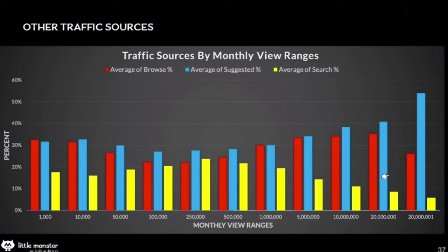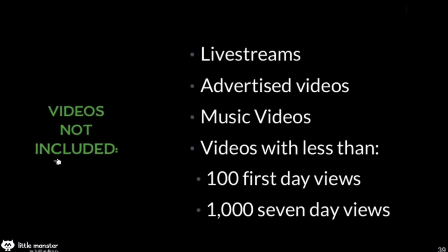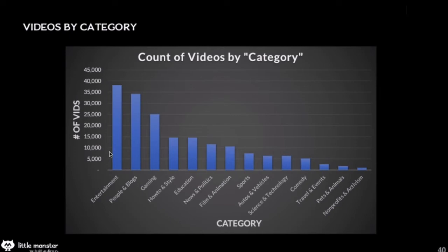Traffic sources by monthly view ranges: as your channel gets larger, search becomes less important, browse becomes less important, and suggested becomes more important — but these three elements continue to be the most important overall. For video data, he didn't include anything about live streams, advertised videos, music videos, videos with fewer than 100 first-day views, or fewer than 1,000 seven-day views.